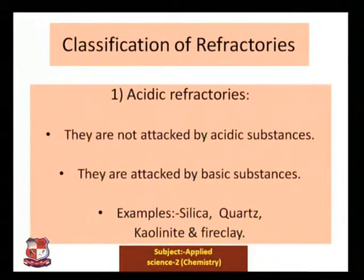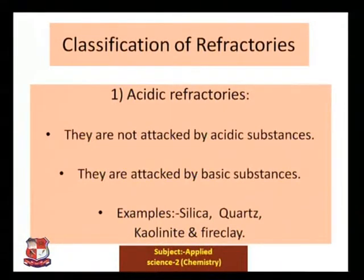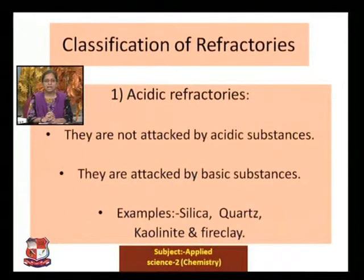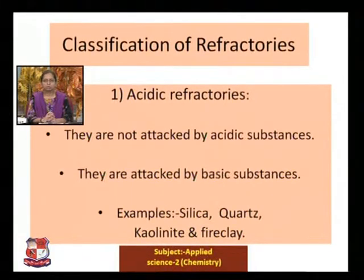The classification of refractories is made into three categories. The first is acidic refractories — materials that are not attacked by acidic substances but are attacked by basic substances. Examples include silica, quartz, kaolinite, and fire clay.